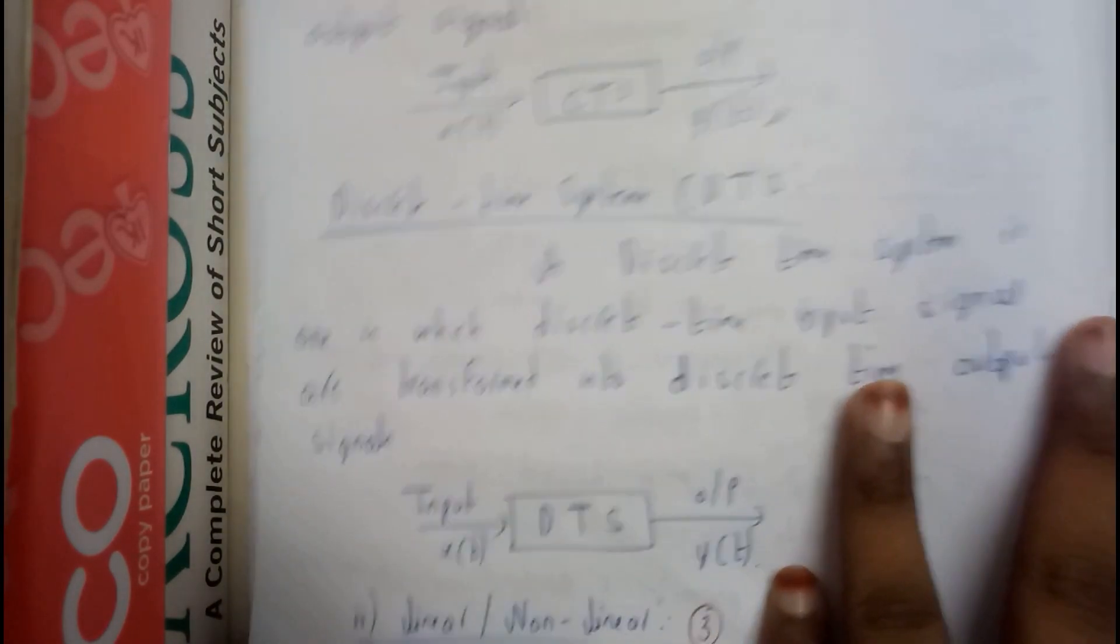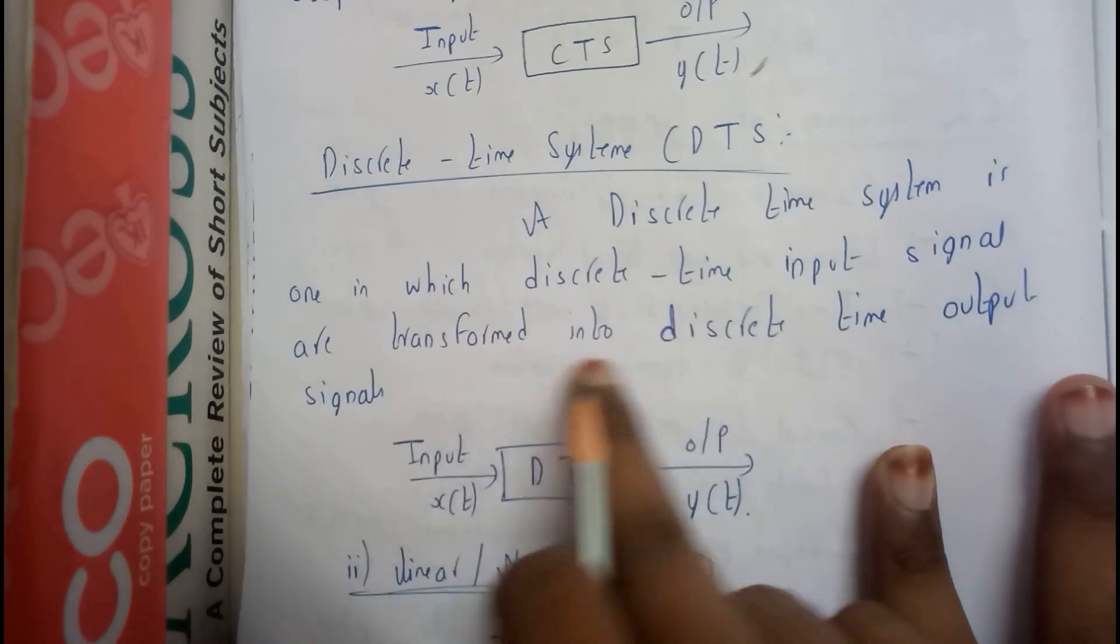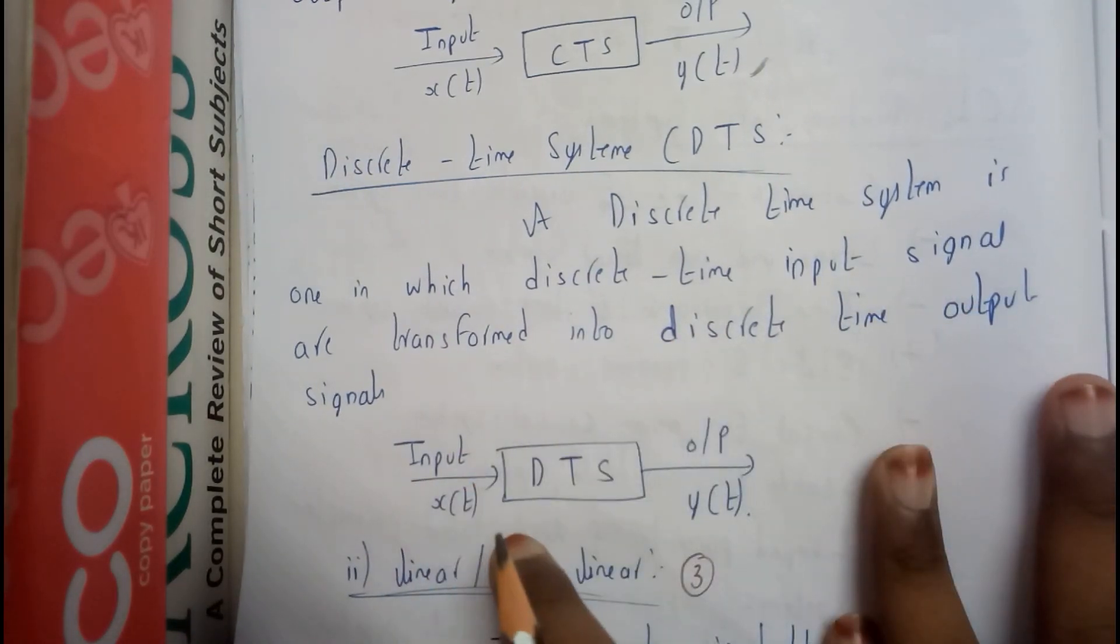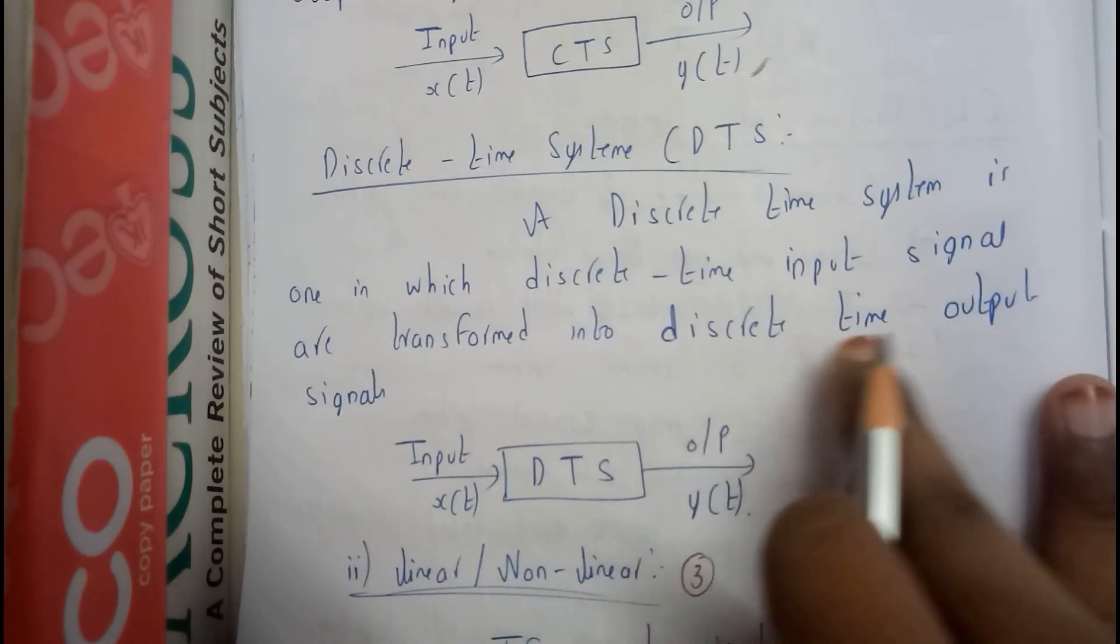Similarly, discrete time system. A discrete time system is one in which discrete time input signals are transferred into discrete time output signals.